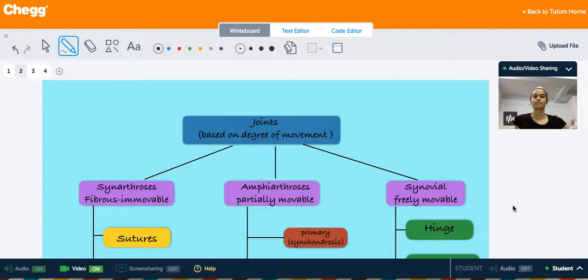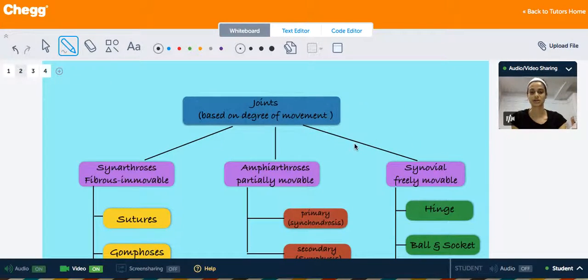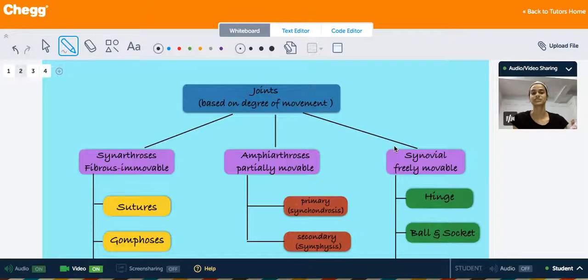I'm going to tell you a little bit about the types of joints and what's different between all the different types. Over here I have a flow chart that shows the different types of joints based on the degree of movement.